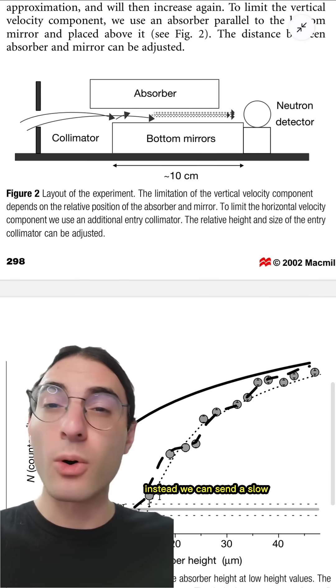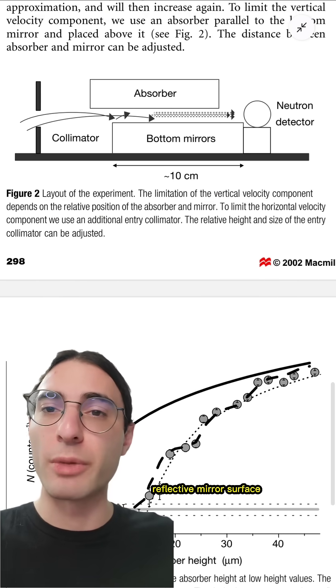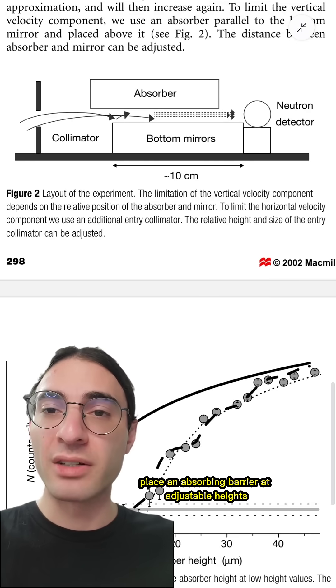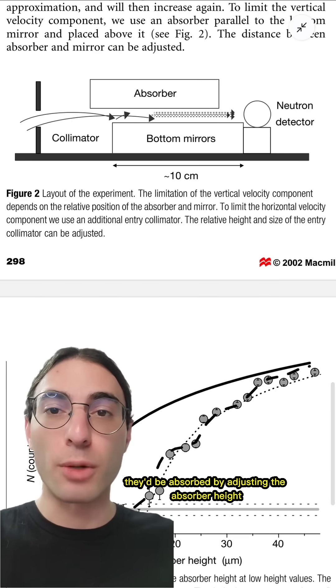Instead, we can send a slow horizontal beam of neutrons across a reflective mirror surface, and above it, place an absorbing barrier at adjustable heights. That way, if neutrons bounced too high, they'd be absorbed.